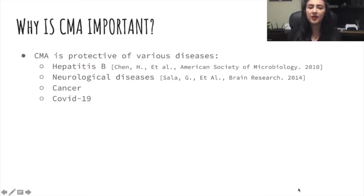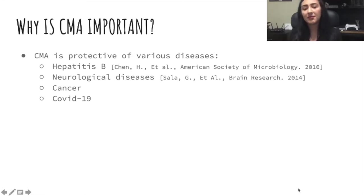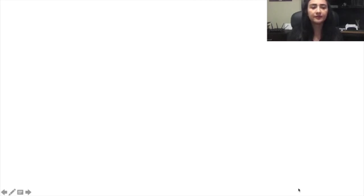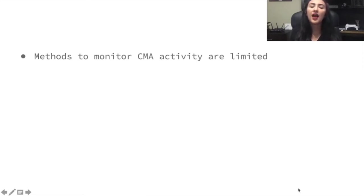So why is CMA important? Well, CMA is protective against various diseases. It will either go faster or more slowly depending on the disease. It has been linked to diseases such as hepatitis B, neurological diseases like Alzheimer's, cancer, and COVID-19, which are all areas of ongoing research to understand how CMA interacts and how we can do something to help it. Even though we know how these diseases are linked to CMA, there are not a lot of methods to monitor CMA activity — meaning we don't know how much of these unhealthy proteins are actually getting destroyed by CMA.